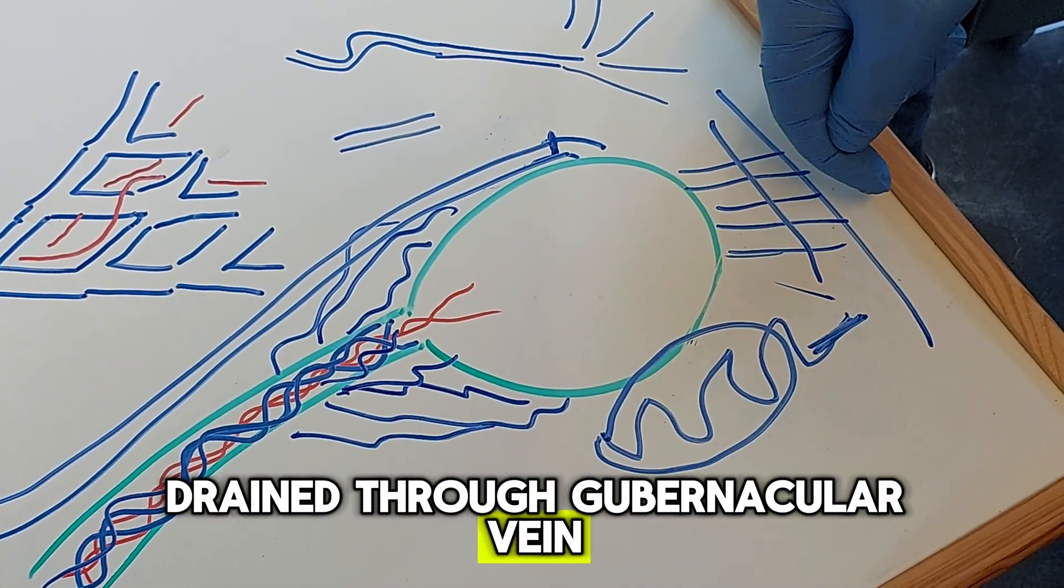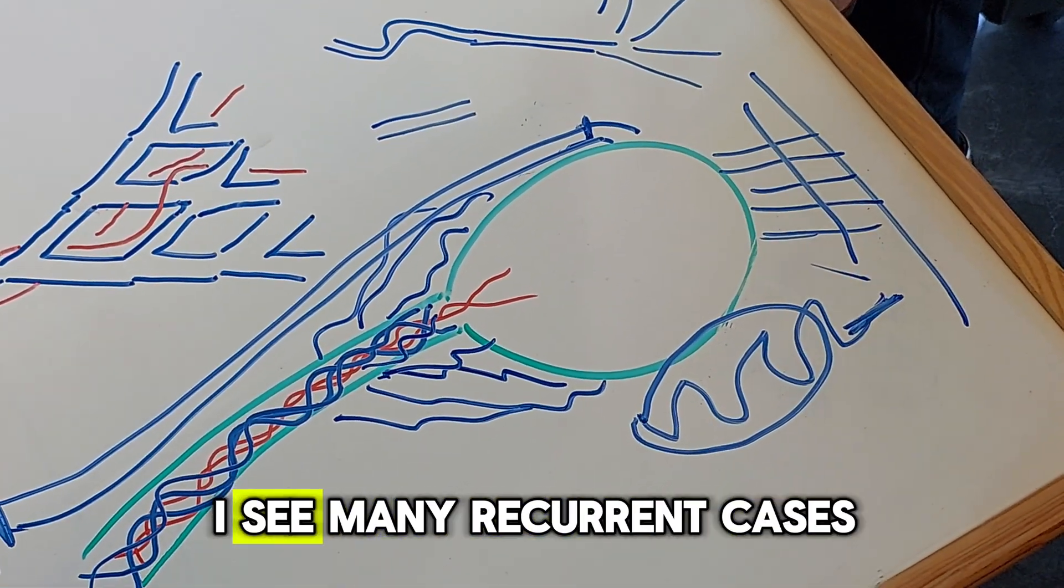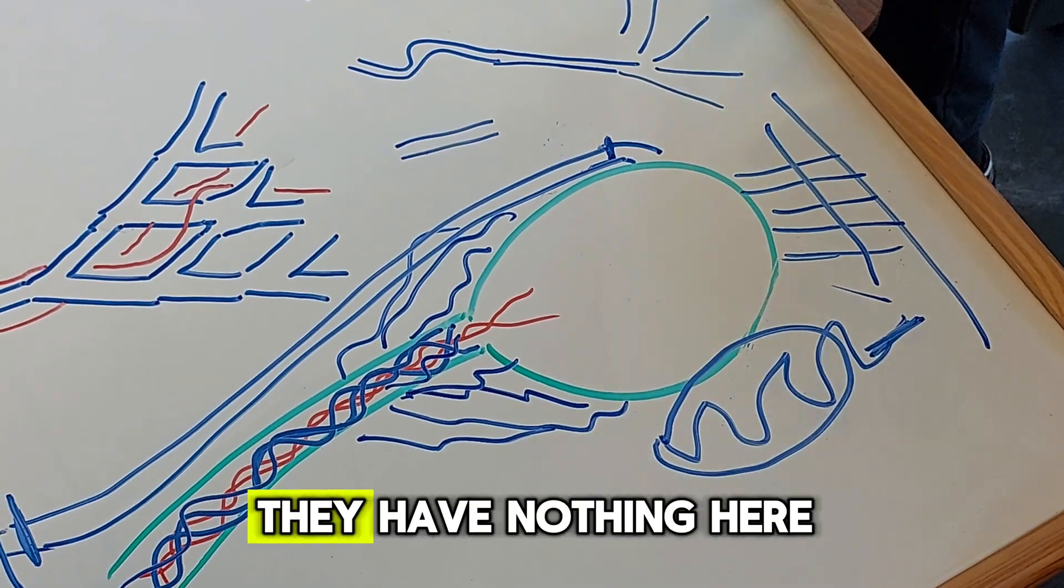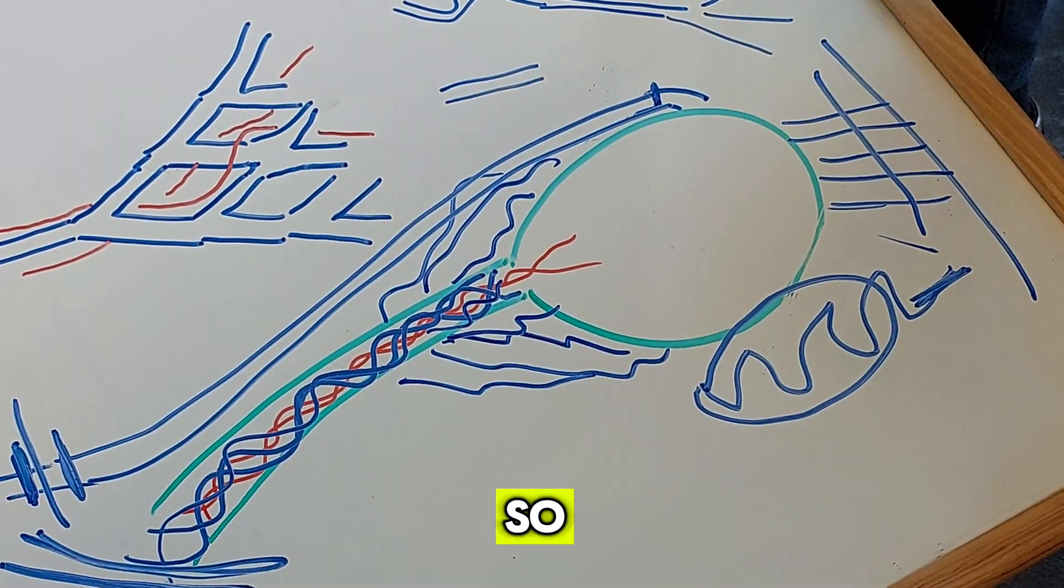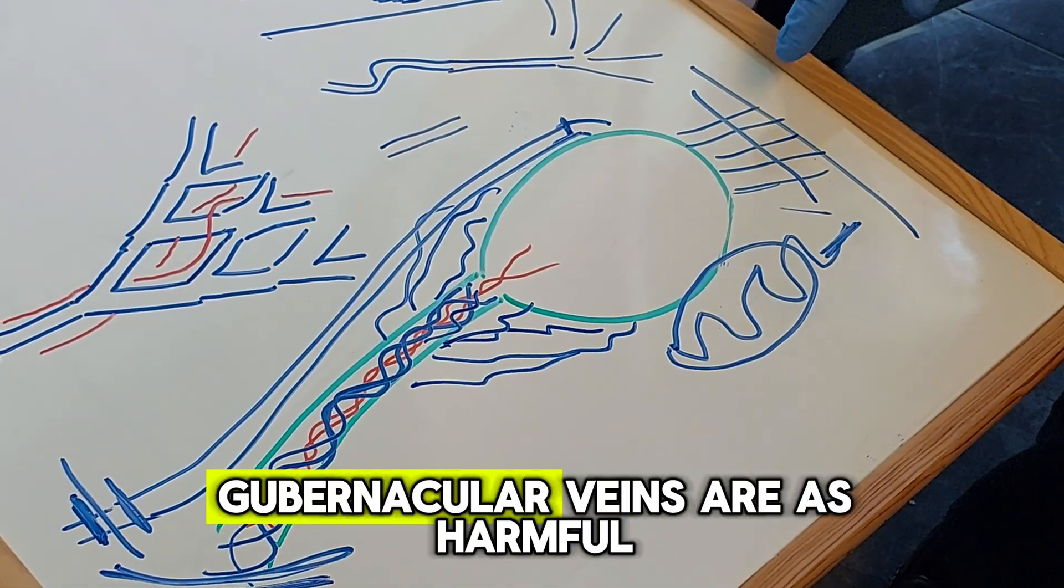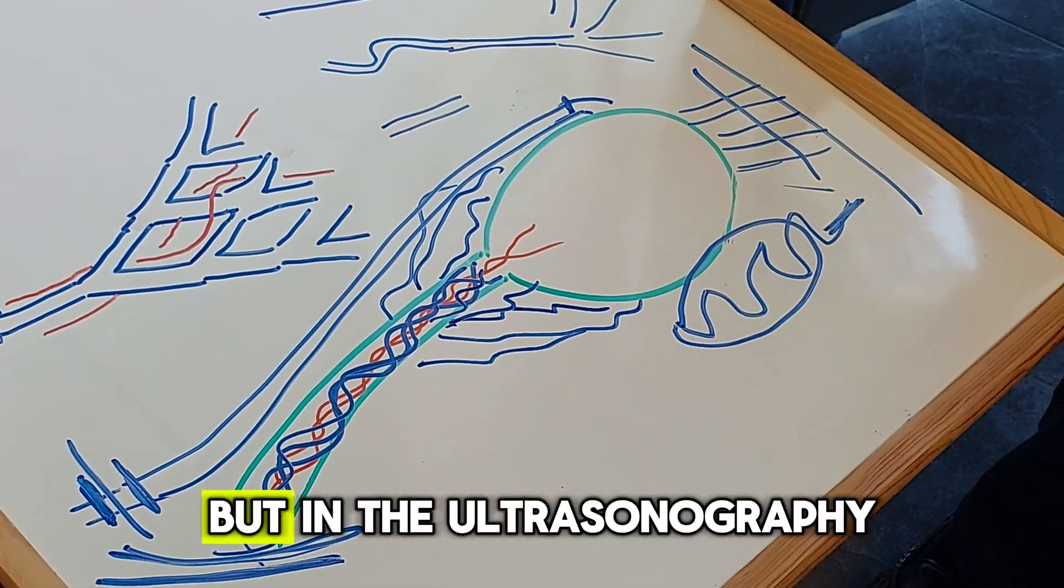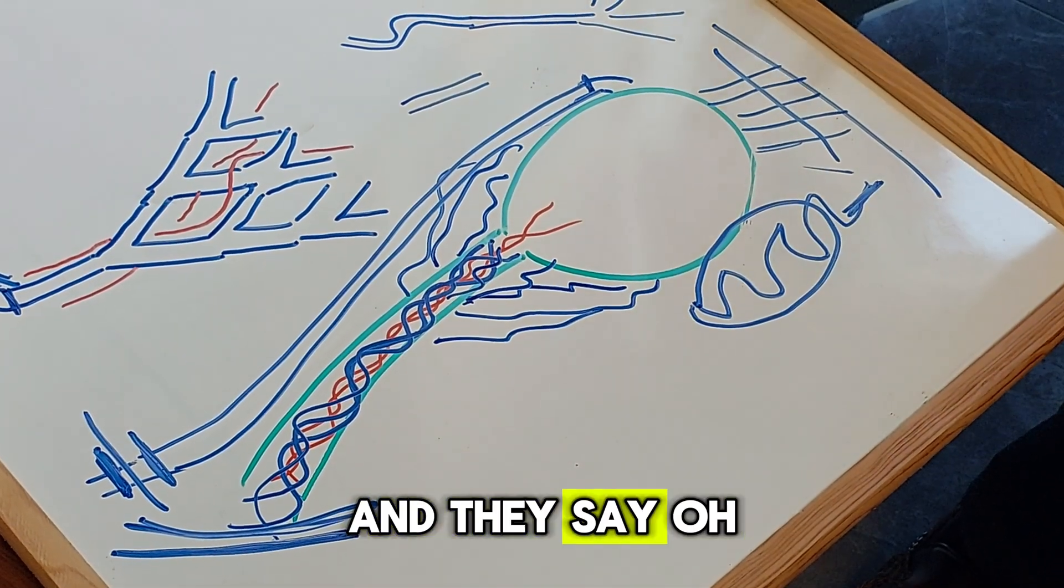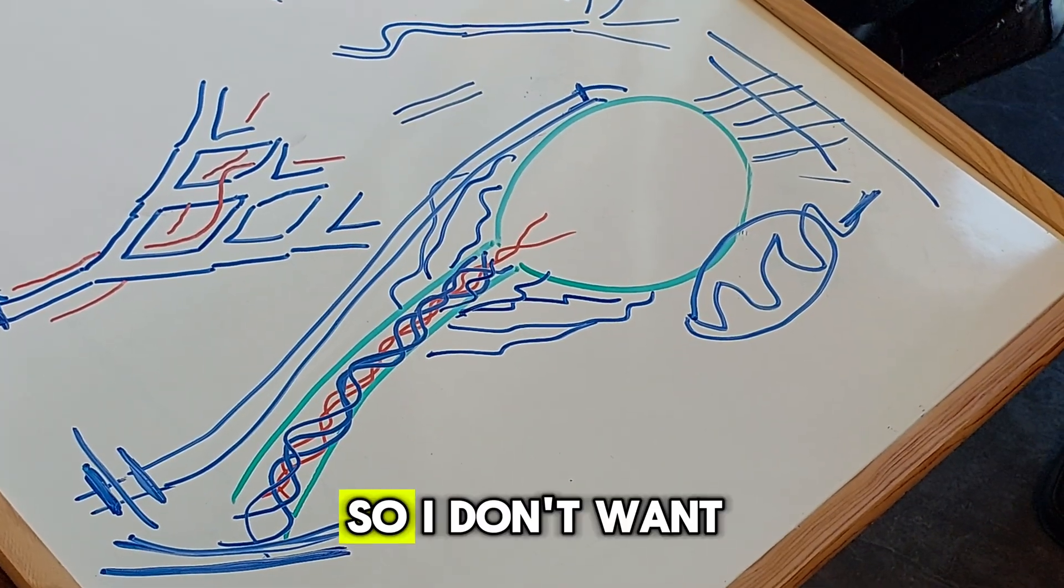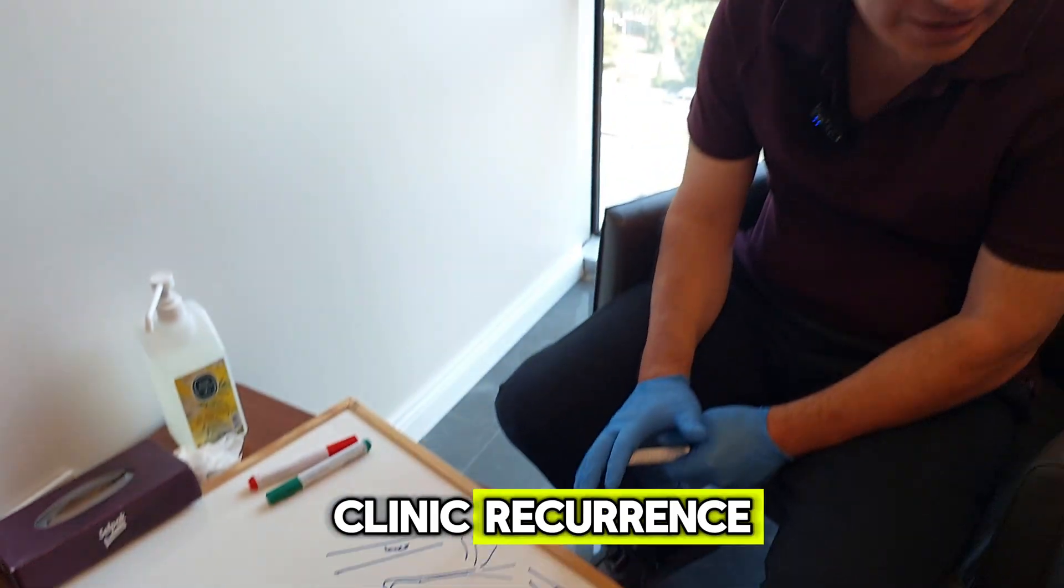And this will make the varicocele to recur. I see many recurrent cases—they have nothing here, just gubernacular vein. So we don't know if gubernacular veins are as harmful as the other veins, but in the ultrasonography radiologists see the veins and they say, oh, this is a recurrence. So I don't want to have radiologic or clinic recurrence.